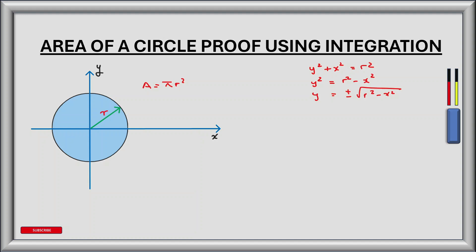The negative square root of r squared minus x squared refers to the lower hemisphere of the circle — so this bit here — while the positive square root of r squared minus x squared refers to the upper hemisphere here.